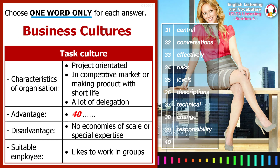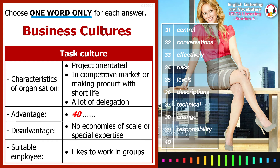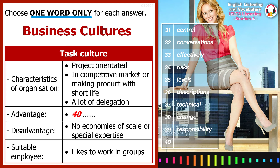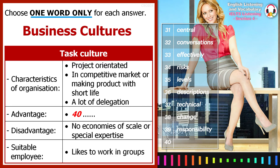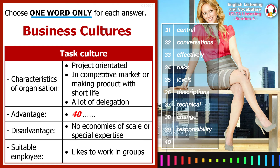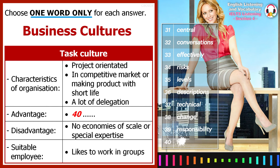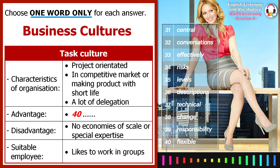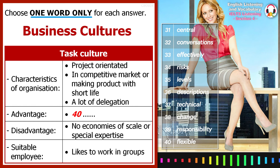Moving on now to task cultures. This type is found in organizations that are project-oriented. You usually find it where the market for the company's product is extremely competitive, or where the products themselves have a short lifespan. Usually, top management delegates the projects, the people, and other resources. And once these have been allocated, little day-to-day control is exercised from the top, because this would seem like breaking the rules. One of the major benefits of this culture is that it's flexible. But it can't produce economies of scale or great depth of expertise. People who like working in groups or teams prefer this type of culture.